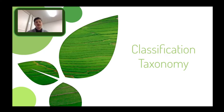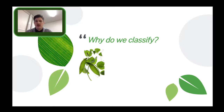Good morning and welcome to this video on classification taxonomy. Today we're going to look at how and why we classify all life on earth. Classification puts organisms into groups by looking at characteristics or traits that they share — what ones they have in common, what ones are different. We've already looked at adaptations and some of those are used to help classify. Other traits that we use are genetic, and we go into much finer detail when we're looking at DNA to classify organisms.